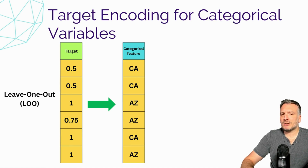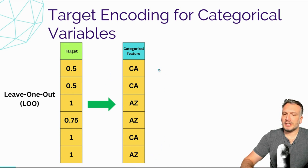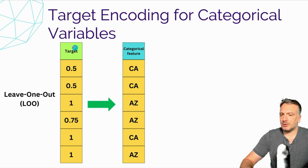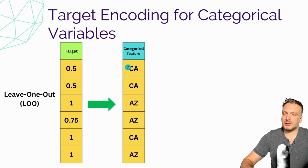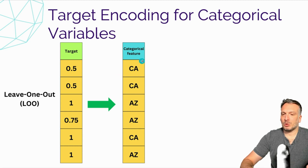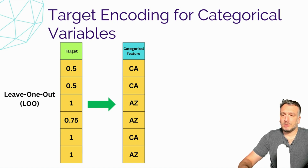Let's understand what target encoding for a categorical variable means. The idea is to encode the categorical variable into a numerical variable by using the values of the target. Here we have a target with different values and a specific categorical variable whose categories are CA and AZ. One way to encode the categorical variable is to replace each category by the average value of the target for that category — to linearize the categorical variable with respect to the target. But this introduces data leakage, because we use the target to learn the target.